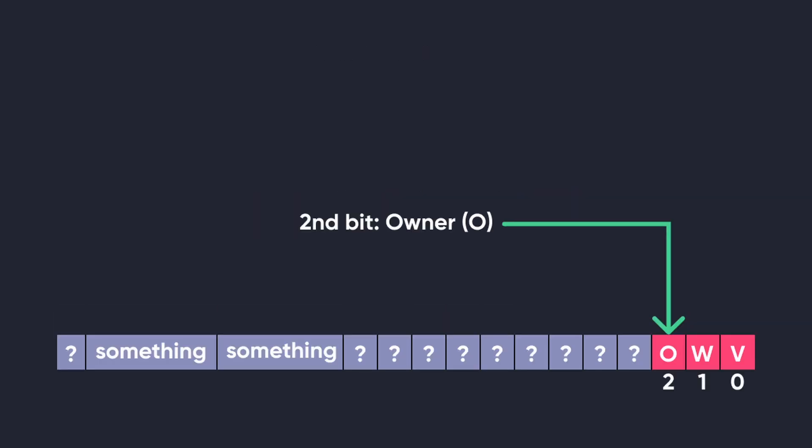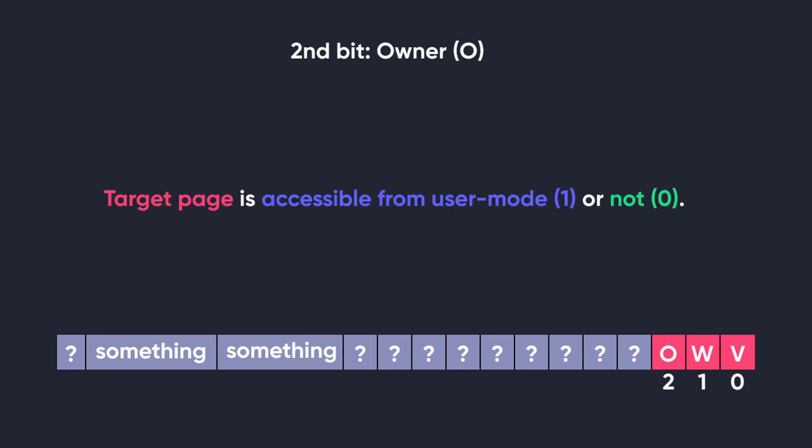The second bit is the owner bit, O. This bit tells whether the page to which this page table entry points is accessible from user mode or not. If it is accessible from user mode, the bit is set to 1, and if it is kernel mode only, then it is set to 0.